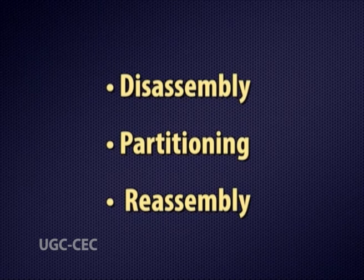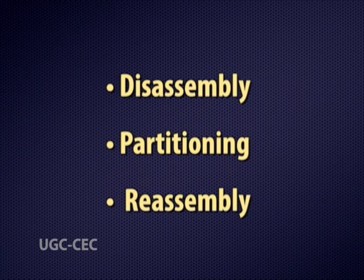The biogenesis of the Golgi apparatus is a three-step process that involves disassembly, partitioning, and reassembly of Golgi membranes, occurring in the late G2 phase of the cell cycle.